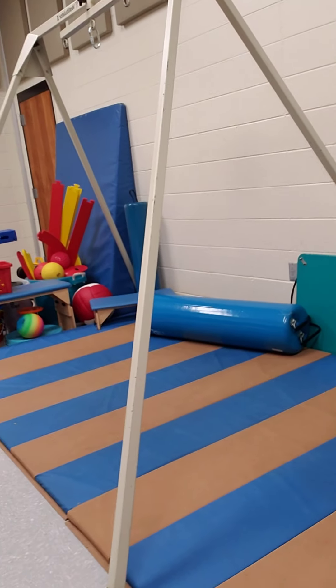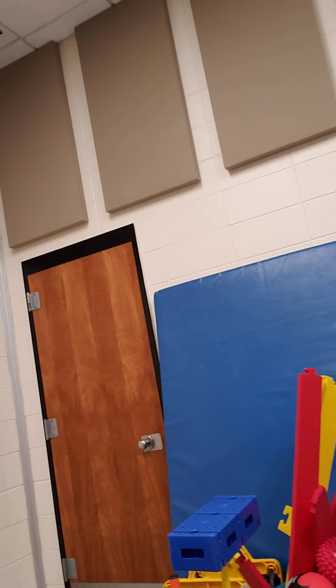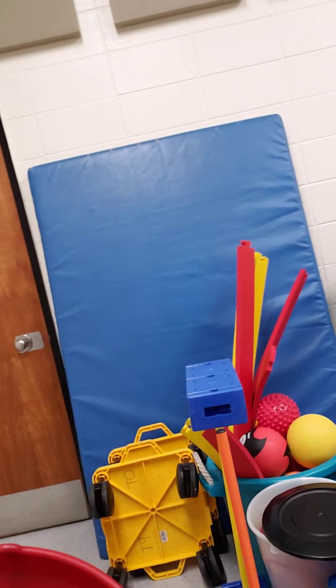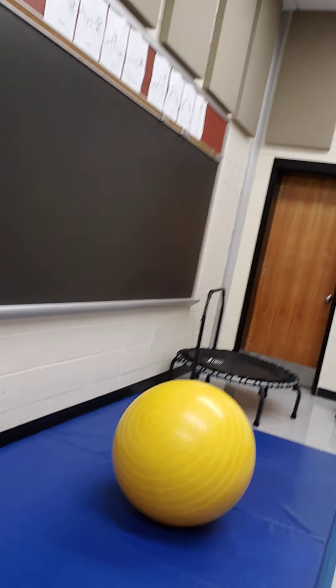Over here we have a swing — I have two different types: a platform swing and a bolster swing. We have a big wedge, a giant top that the kids can sit in and spin, scooters, and two trampolines. Kids get a specified one if they come in with a buddy, so we keep our germs to ourselves. I also have a large ball and lots of mats.